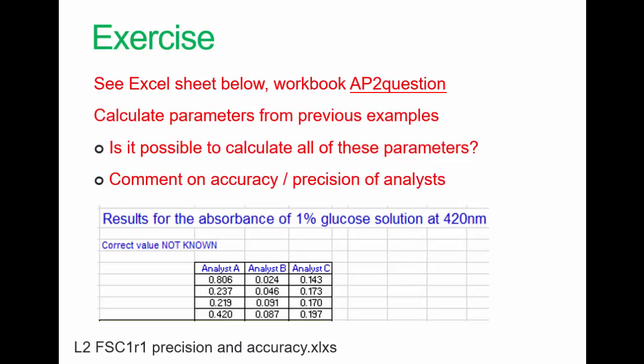There's also a second exercise with some quite wildly differing results. These are results from analysis of Maillard reactions and it does make a lot of difference exactly how you do the results. So in this case, it doesn't matter that the results are different from each other. They were done under different conditions. But again, calculate the parameters and think about is it possible to calculate all of these parameters given the fact that we don't know what the actual answer is, and then comment a bit on what you can say about the precision and accuracy of the analysts again. Okay, there we are. Thank you. We're back for the second part. Reasonably so.